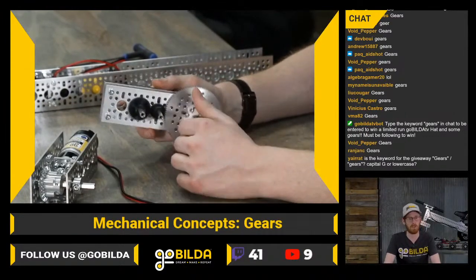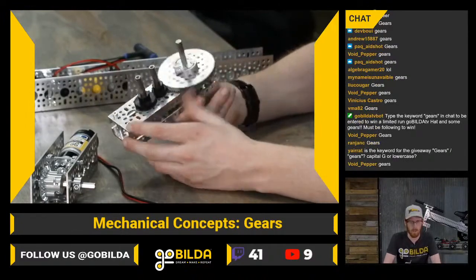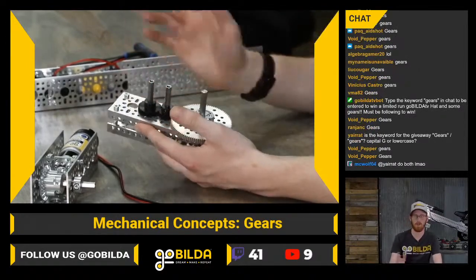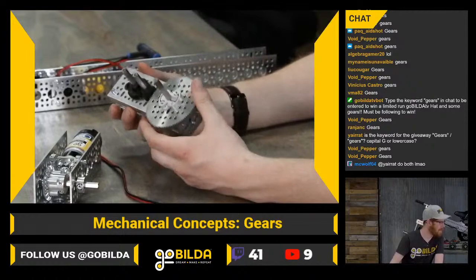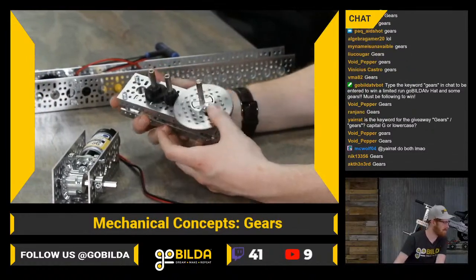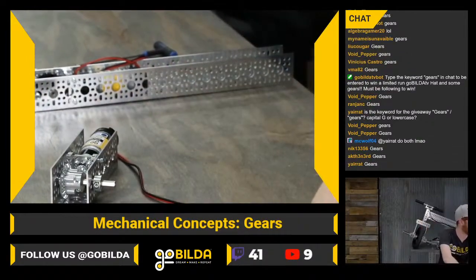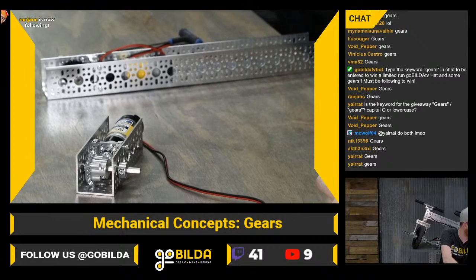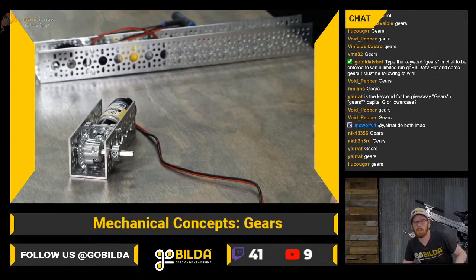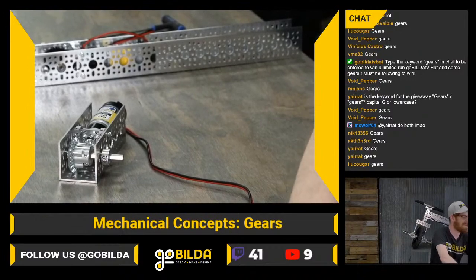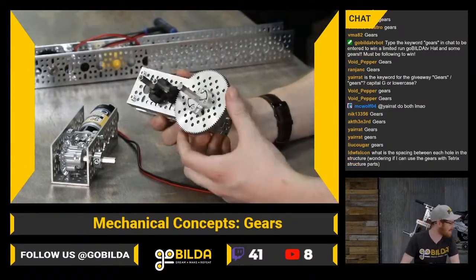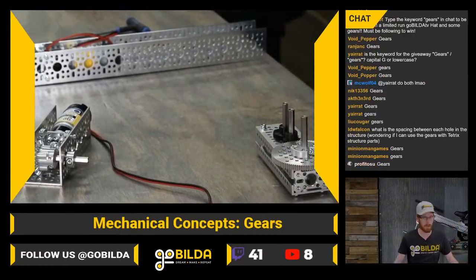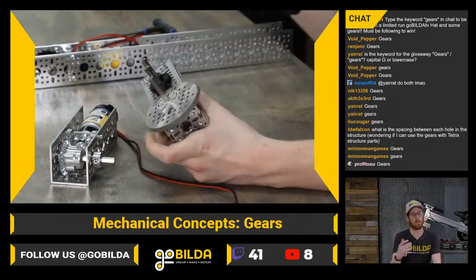In this demo setup we have a 36-tooth to 96-tooth configuration, which gives a funky ratio because those gears aren't really designed to work together in goBUILDA — the spacing doesn't work out on 24mm pitch. The keyword for the giveaway is 'gears' — lowercase should work.